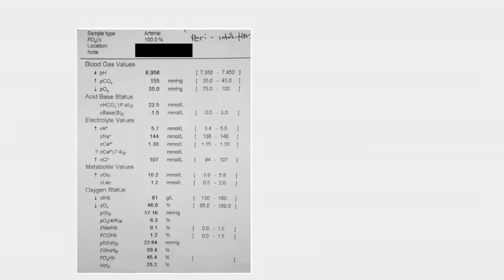A corrected ABG showed: pH 6.956, PCO2 155 — a clear-cut severe respiratory acidosis. The patient was severely acidotic. Given that the tube position was confirmed with bilateral equal air entry, the question is what could cause such severe respiratory acidosis. In a ventilated patient with pH around 6.9–7.1 and PCO2 of 100–155, you should think of two major causes: tube block or pneumothorax.